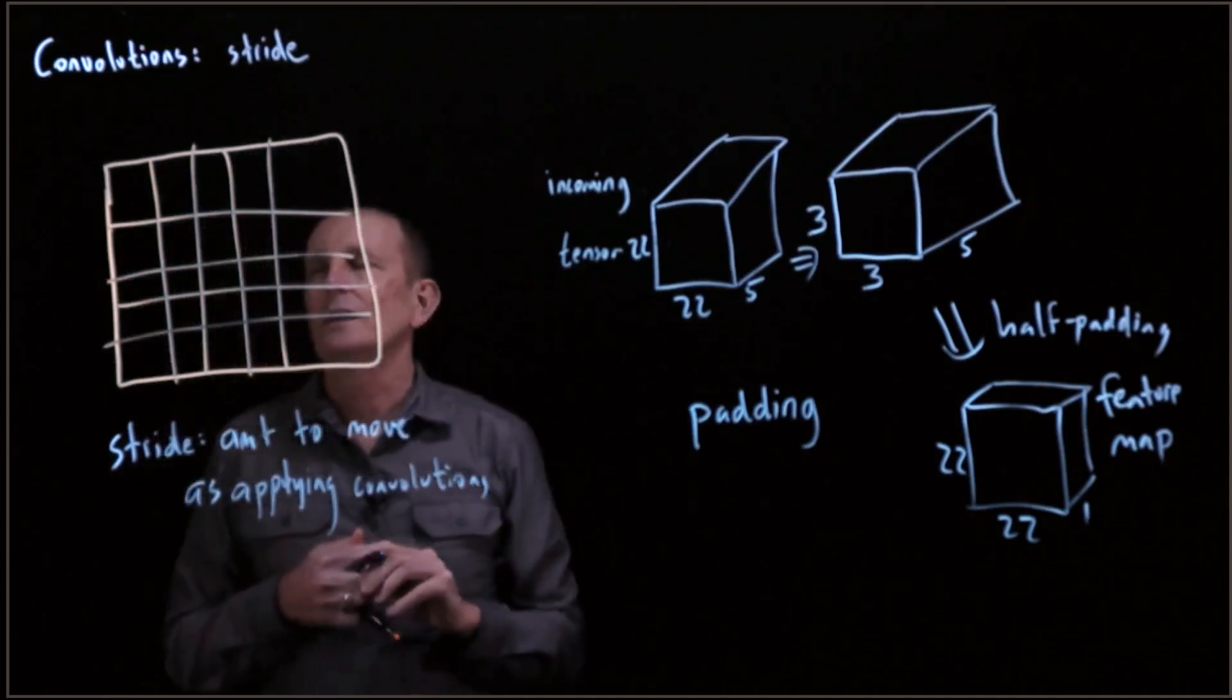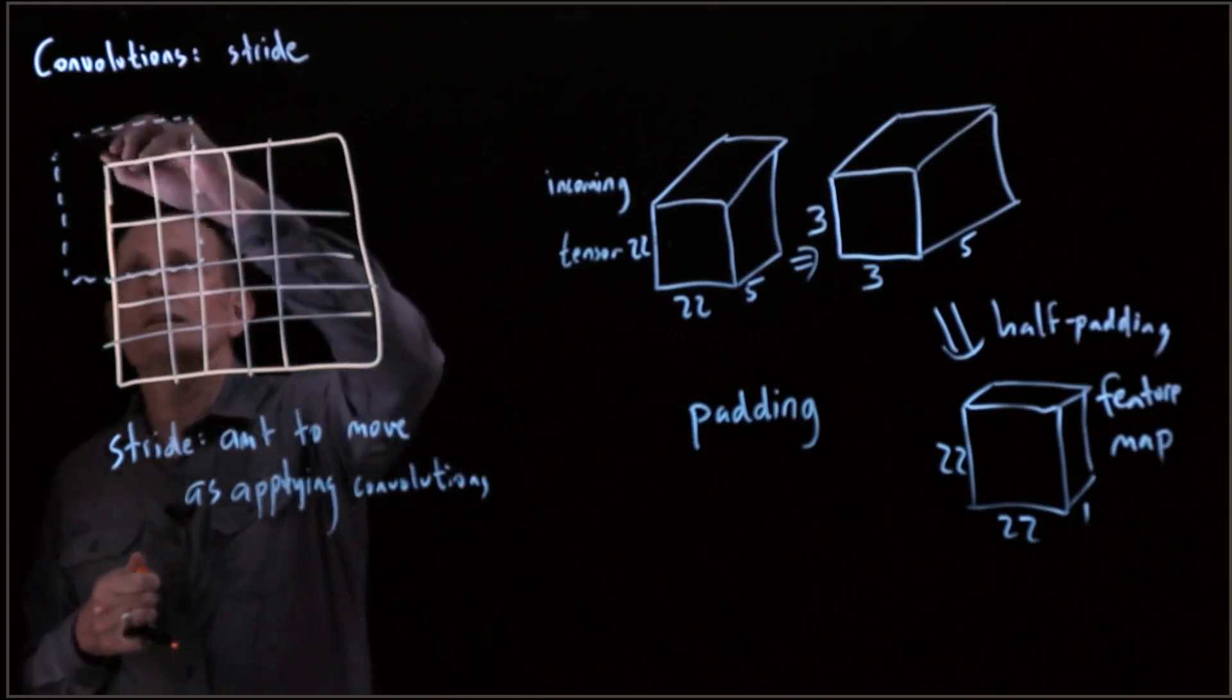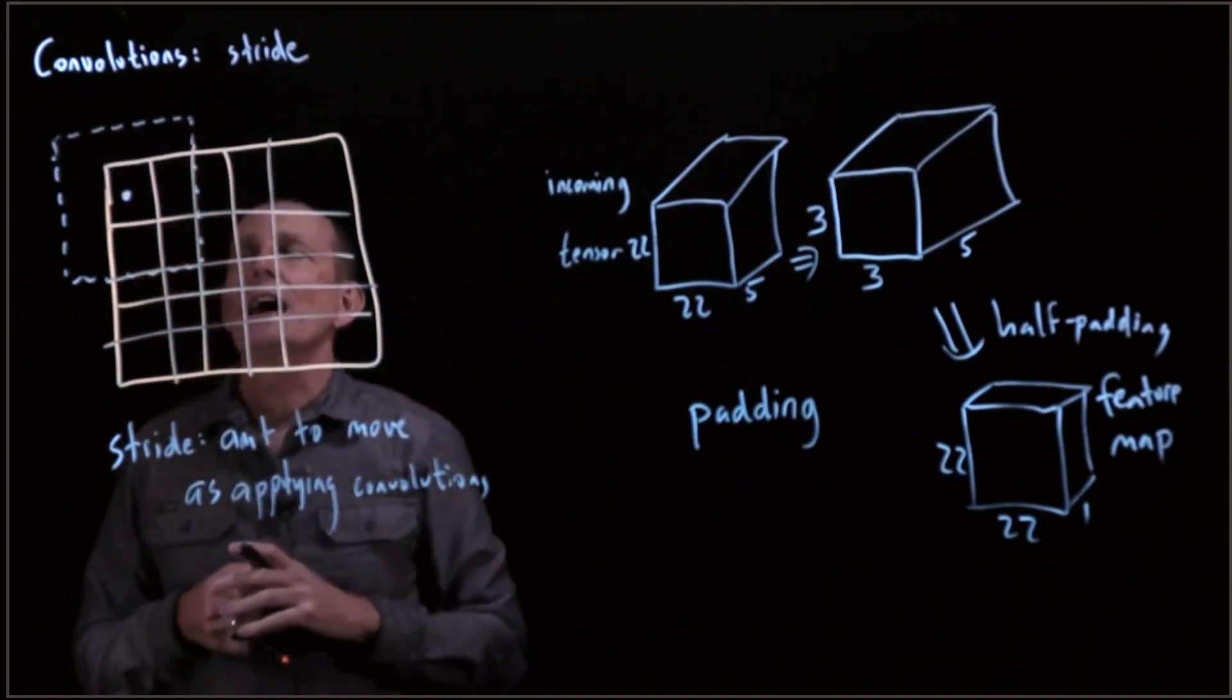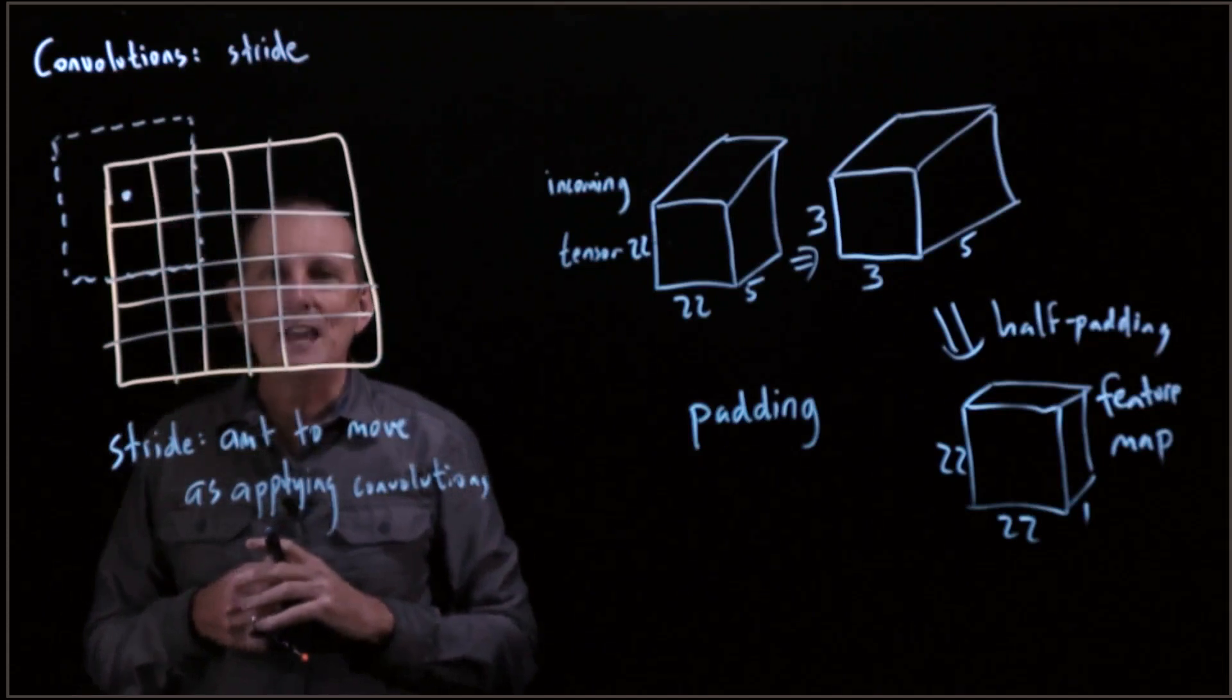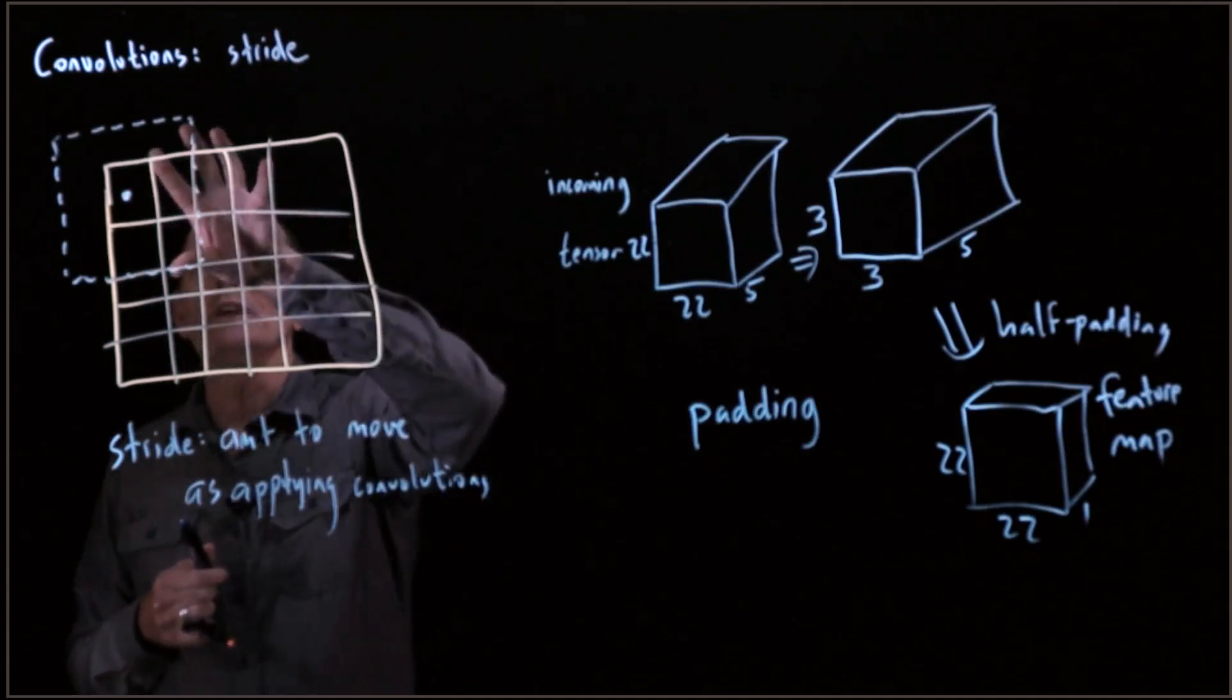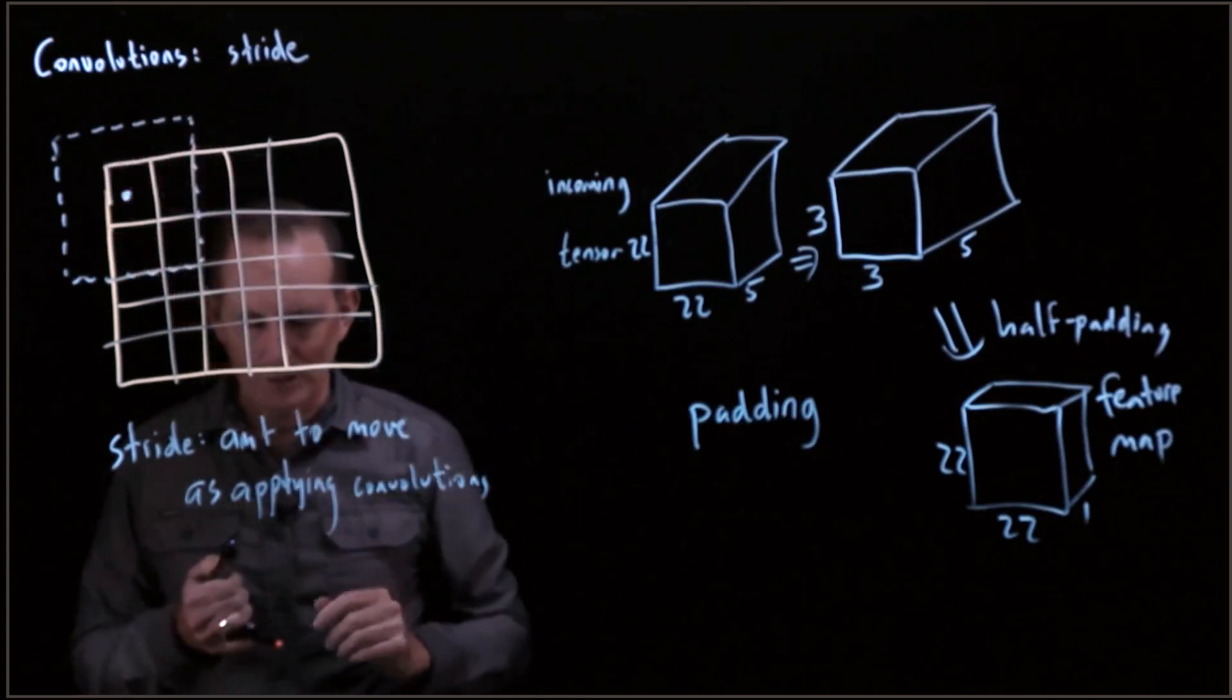We've got this input, and we now look at a convolution, a 3 by 3 convolution, centered here. Then in our next application of the convolution, we'll go here, and we'll then have an overlap of 2 pixels with the previous convolution.